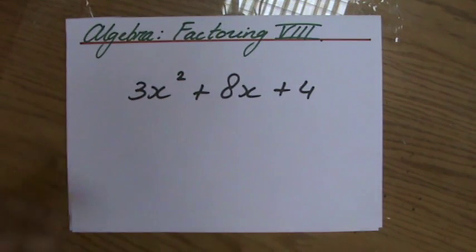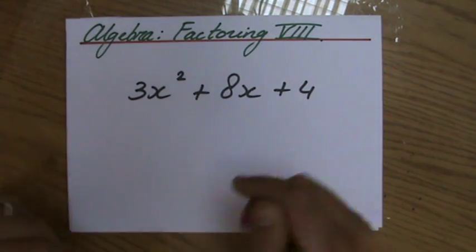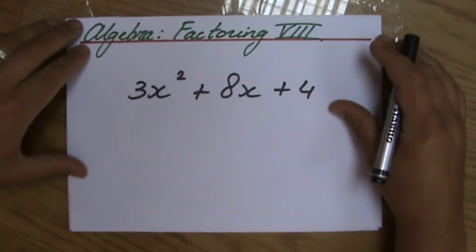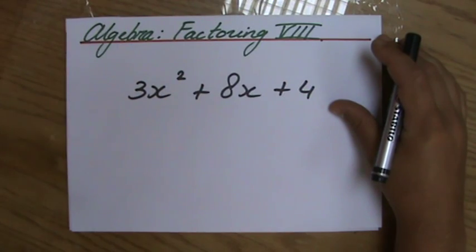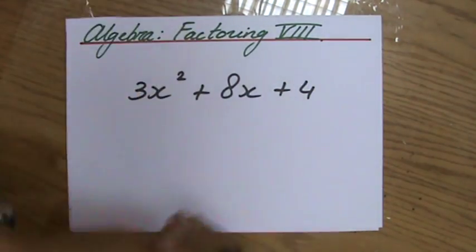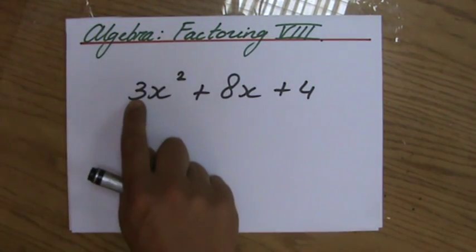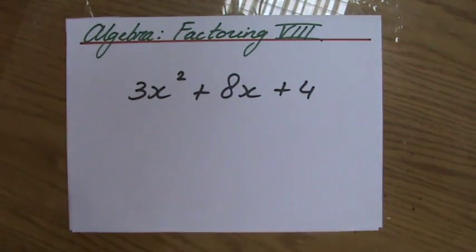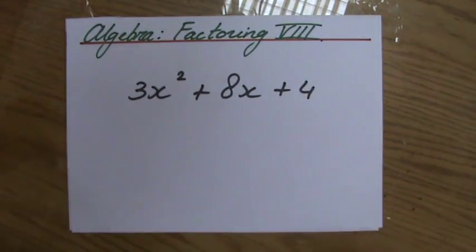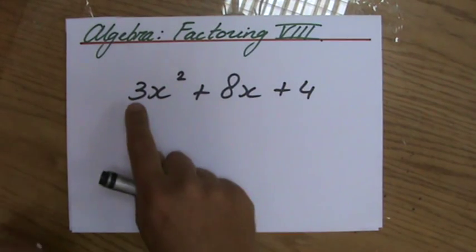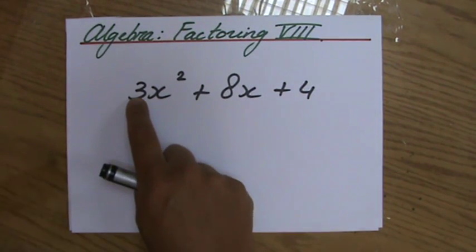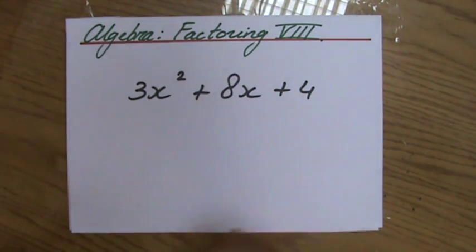So an example question: 3x squared plus 8x plus 4, and we have to factorize this expression completely. Is there a common factor? No, because sometimes you can get rid of the 3 like that and then it's just a normal factoring question — but there isn't. Is it grouping? No, because it doesn't have 4 terms. Is it normal factoring? No, almost — but there is a 3 there. So it is the extra normal factoring.